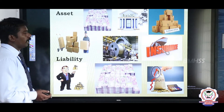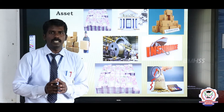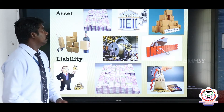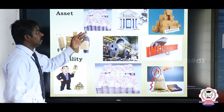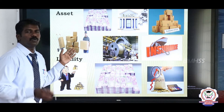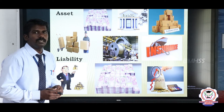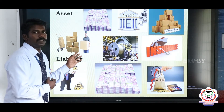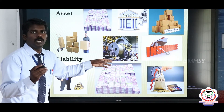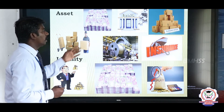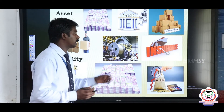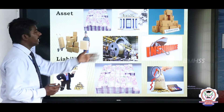Next, asset. Whatever in a business organization can be converted into cash within a short period is called an asset. Examples of assets include cash in hand, cash at bank, closing stock, debtors — a debtor is a person who receives goods from the company on credit and will pay the amount later — machinery used for production, and prepaid expenses such as insurance. These are all examples of assets.